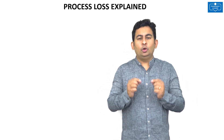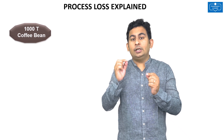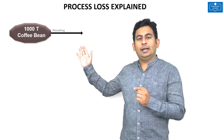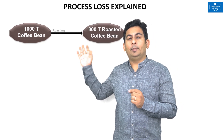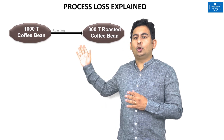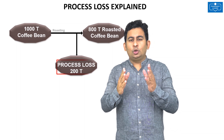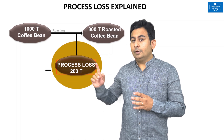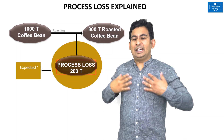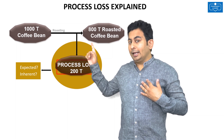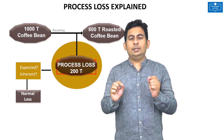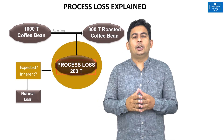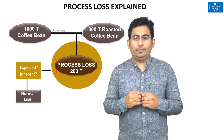Let me take the example of a coffee powder manufacturer. Usually when they introduce 1000 tons of coffee bean into the roasting process, they generally get 800 tons of roasted coffee bean. There is a loss of 200 tons in this process — this 200 tons is called the process loss. If this loss is expected and inherent to the manufacturing process, we call it normal loss.